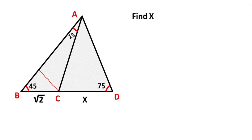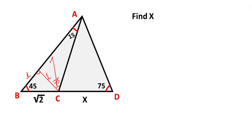First step: draw a perpendicular opposite the 45 degrees. If there is a root 2 opposite the 90 degrees, then opposite the 45 degrees must be equal to 1 unit. And then this side is also 1 unit. Notice that if there is a 1 unit opposite the 15 degrees, then opposite the 75 degrees must be equal to root 3 plus 2 units.